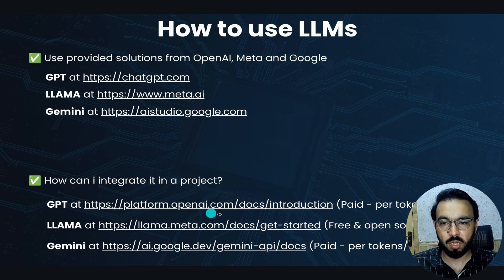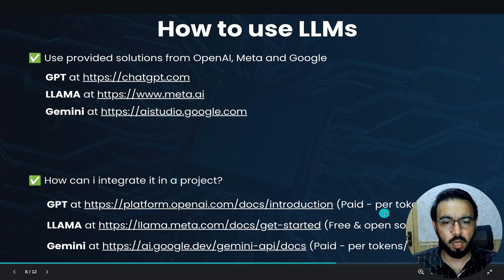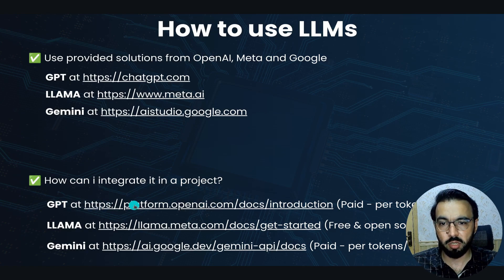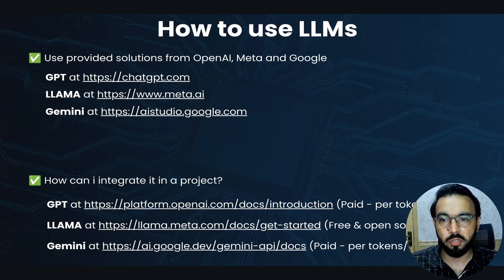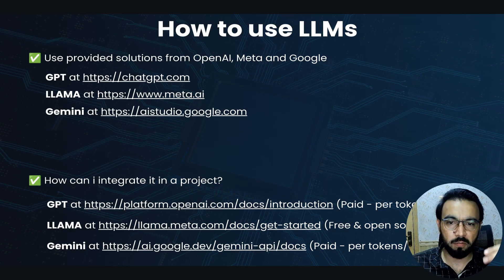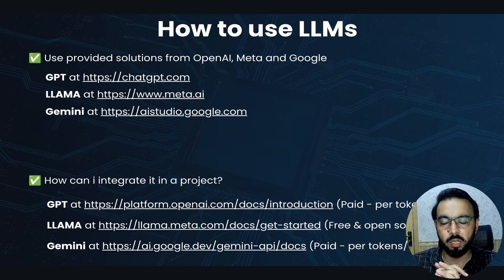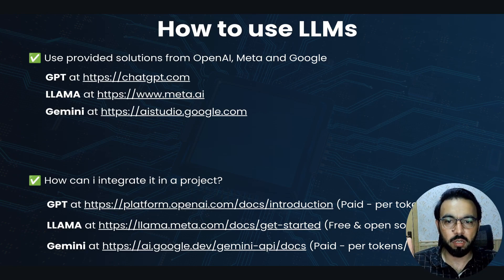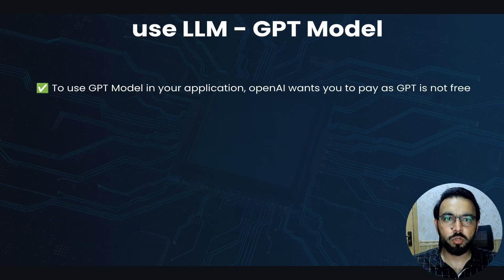One important thing to remember: the Llama model is free and open source, but GPT and Gemini are not free and not open source. Every time you integrate GPT or Gemini into your application you need to pay. You're charged based on how many tokens you use — roughly one word equals one token, and around 1,000 words equals about 750 tokens. You pay for both input data provided and output data generated.